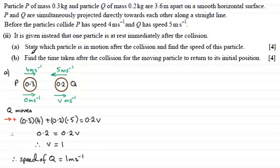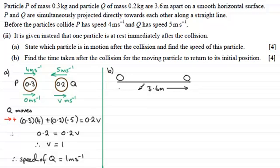Now for part b we've got to find the time taken after the collision for the moving particle to return to its initial position. So we'll just rule this off here and for part b I feel that we're going to need to draw a simple diagram. We'll take our smooth horizontal surface, something like this. We've got our two particles P and Q which are initially 3.6 metres apart. So just mark that in as so.